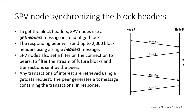To get the block headers, SPV nodes use a get headers message instead of get blocks. The responding peer will send up to 2,000 block headers using a single headers message. The process is otherwise similar to that used by a full node to retrieve full blocks.